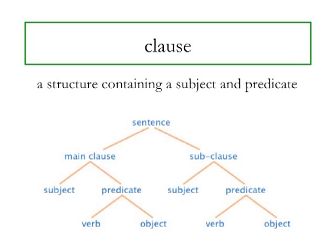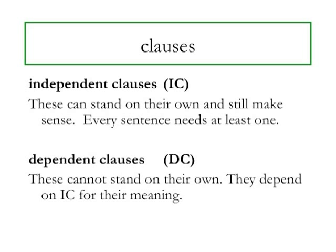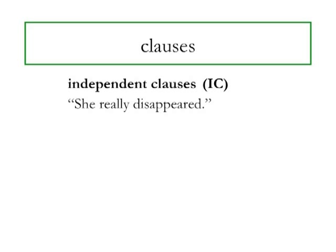There are two types of clauses: independent and dependent. Independent clauses can stand on their own and still make sense. These are always necessary for a sentence to be complete. Dependent clauses cannot stand on their own — they have to lean on an independent clause for their meaning. I'll use the abbreviations IC for independent clause and DC for dependent clause throughout the rest of this lesson. Let's take a look at an example of an independent clause and a dependent clause. An independent clause has a subject and a predicate and it expresses a complete thought.